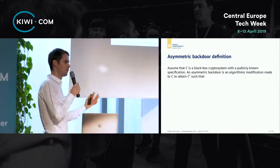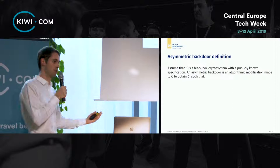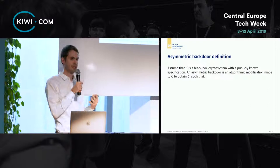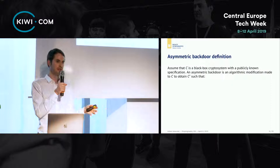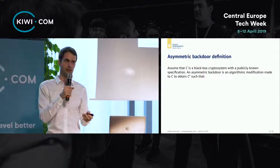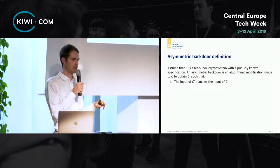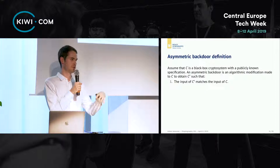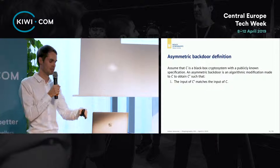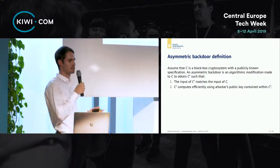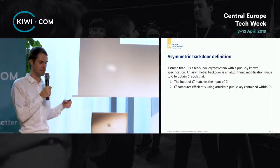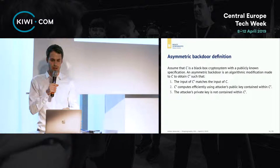We'll proceed to the formal definition of what properties this backdoor has. The backdoor is called an asymmetric backdoor because it inherently utilizes asymmetric cryptography. Suppose we have some original cryptographic algorithm C and modify it to obtain C-prime. The first condition is that the clean version and infected version have the same input — you can't tell them apart based on what goes in. The second condition is that the modified backdoor version computes efficiently and uses the attacker's public key somehow.